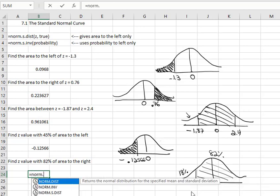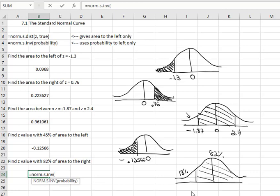So I can say equals norm.s.inv, open a parenthesis, and the area to the left that I want is 0.18. And when I hit enter, I see a z value of negative 0.91537. We'll put 82% to the right and 18% to the left.